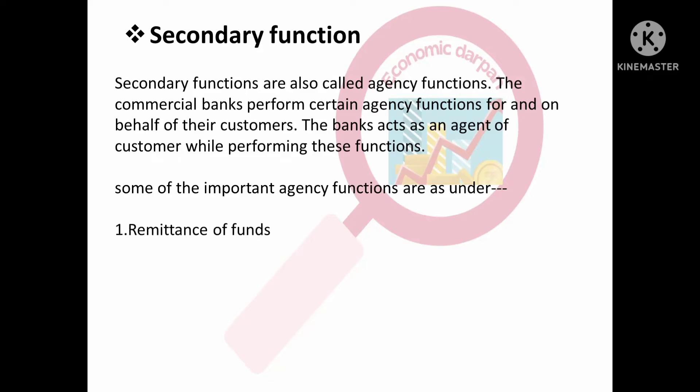The first secondary function is remittance of funds — providing facilities like bank drafts and checks. The second is collection and payment of credit instruments, where commercial banks collect and pay different negotiable instruments like checks, bills of exchange, and promissory notes.